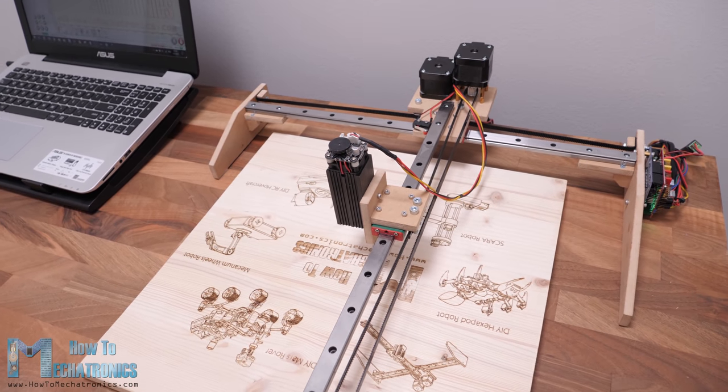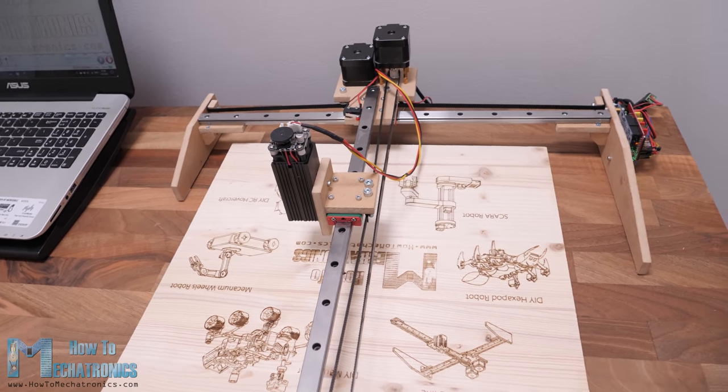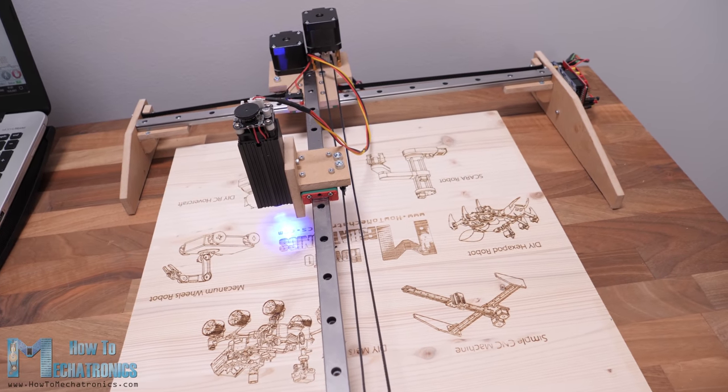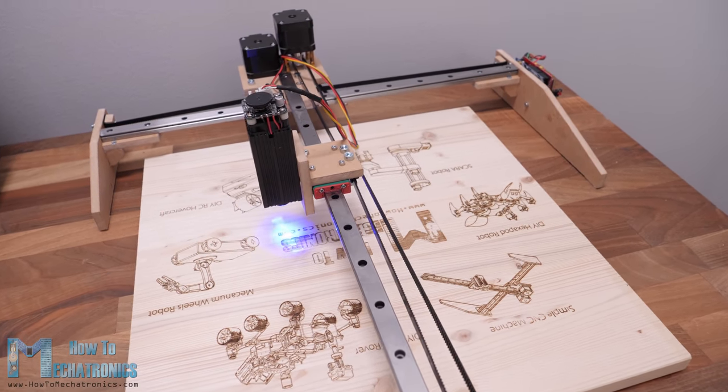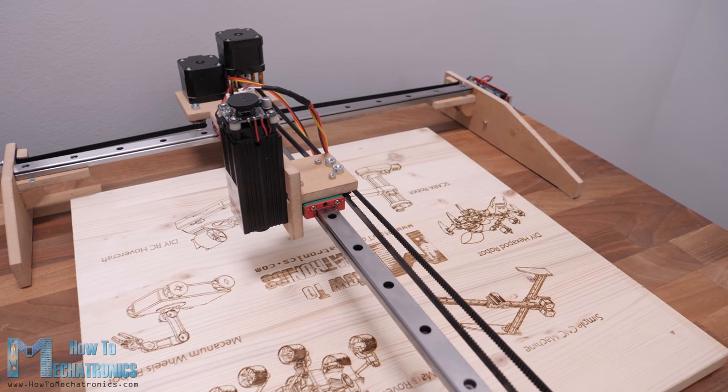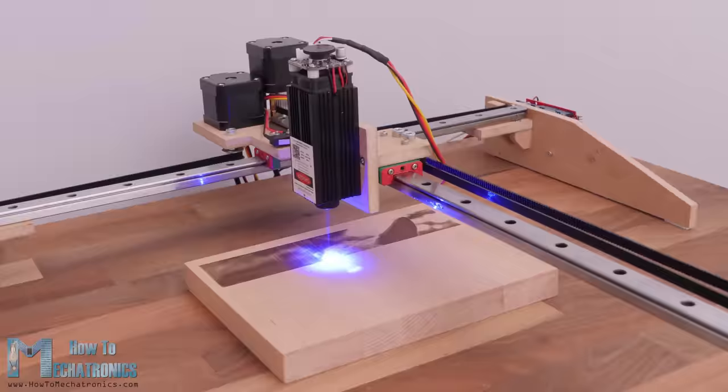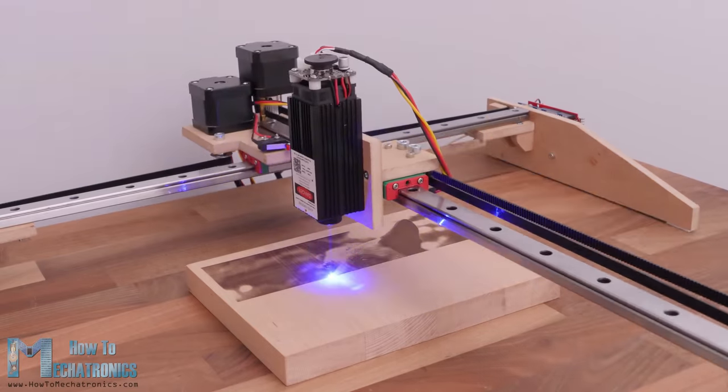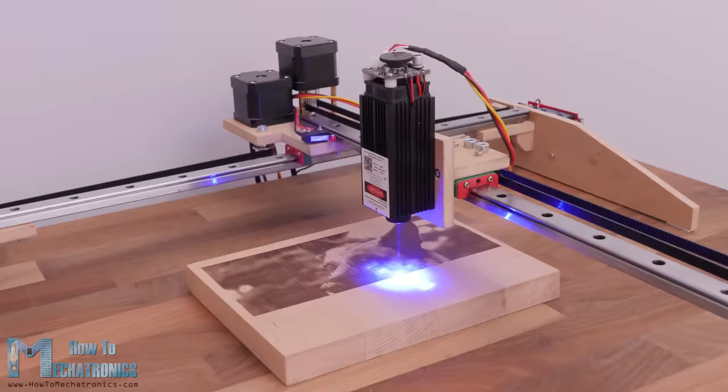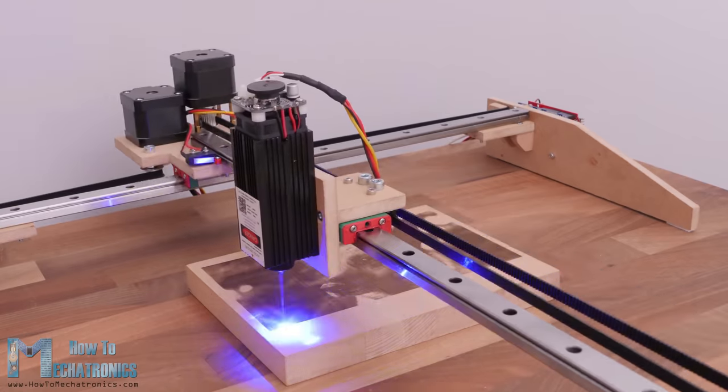The material that I used for this build is 8mm MDF board which is actually quite strong and probably more rigid than 3D printed PLA material, and at the same time it's easy to work with. For this video I will use this CNC machine as a laser engraver and in a future video I plan to make it work as a pen plotter.